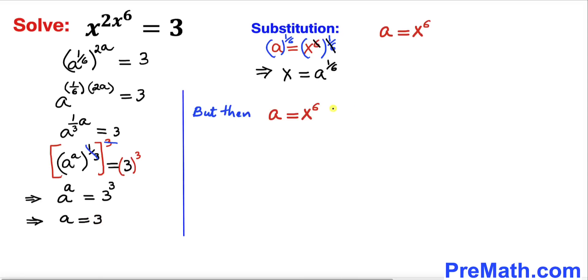But we know that a equals to x power 6. So therefore I am going to replace this a equals to 3 over here. So therefore we can write 3 equals to x power 6.